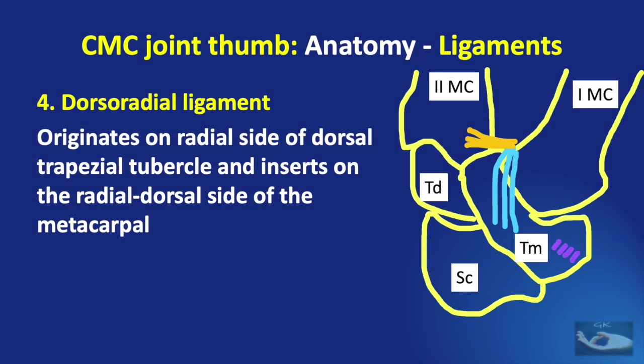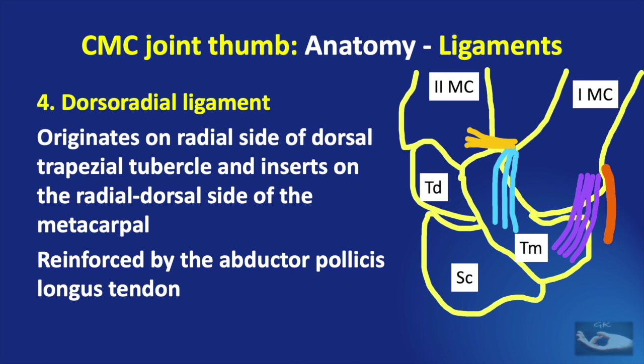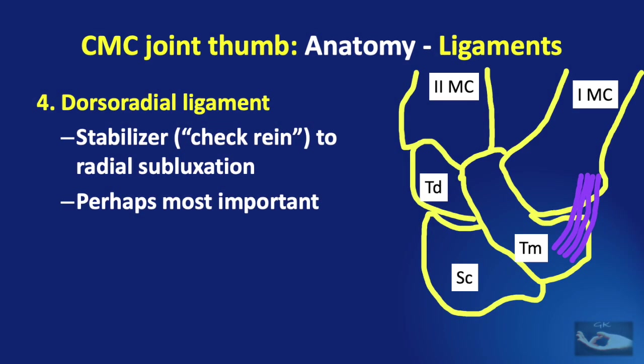The dorsoradial ligament originates on the radial side of the dorsal trapezial tubercle and inserts on the radial dorsal side of the first metacarpal base. It is reinforced by the abductor pollicis longus tendon and acts as a stabilizer or check rein to radial subluxation. It becomes taut with radial or dorsoradial subluxation before the other ligaments, and if all other ligaments but this one are cut, the carpometacarpal joint of the thumb still remains reduced.